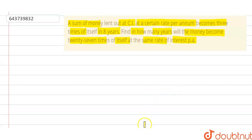So let's start the solution. First, we can let the sum of money be rupees P and the rate of interest be r percent per annum.